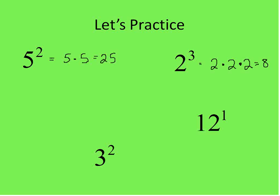3 squared, or 3 to the power of 2, means 3 times 3, which is equal to 9. How many times do we multiply the base times itself? 2 times — so that's 3 times 3. Then 12 to the power of 1 — and I put this example in just to show you, it may seem silly — but 12 to the power of 1 is just 12. Any number raised to the power of 1 is just equal to that number. It's not 12 times 1, it's just 12.